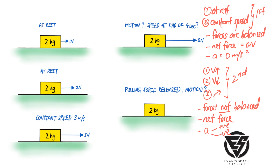In the first scenario, you have a block of mass 2 kg on the floor and you apply a pulling force of 1 Newton. It's given that this box remains at rest, so straightaway this is Newton's first law — forces are balanced, net force is zero, no acceleration. Since the pulling force is 1 Newton, there must be a friction force between the block and the floor equal and opposite to it, therefore also 1 Newton.